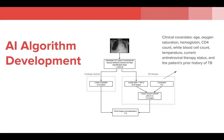The eight clinical covariates consisted of the patient's age, oxygen saturation, hemoglobin, CD4 count, white count, temperature, current antiretroviral therapy status, and the patient's prior history of TB. These were then fed into a 2D neural network, the output of which was combined with the output from the findings module, in order to obtain a predicted probability of TB diagnosis for that particular patient.